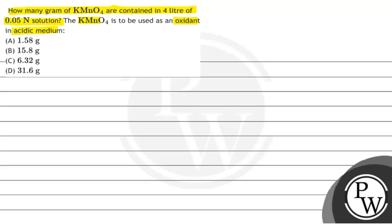This KMnO4 is used as an oxidant or oxidizing agent in acidic medium. So the key concept here is calculation of grams of KMnO4 in a solution. We will find out the mass of KMnO4 from the given solution.